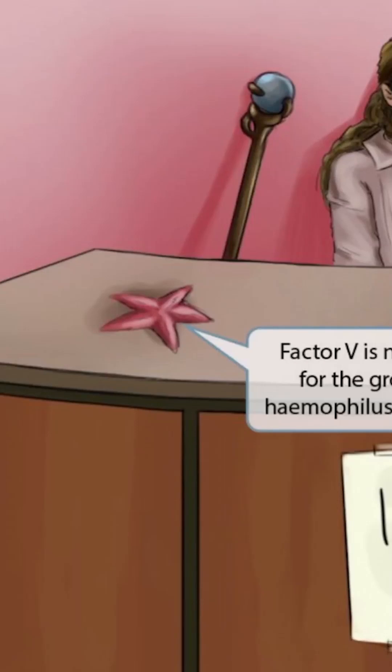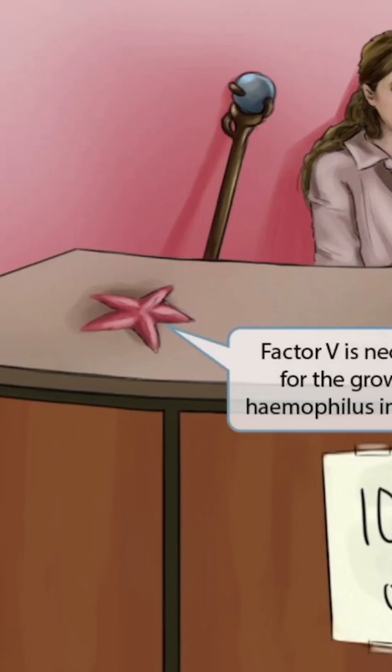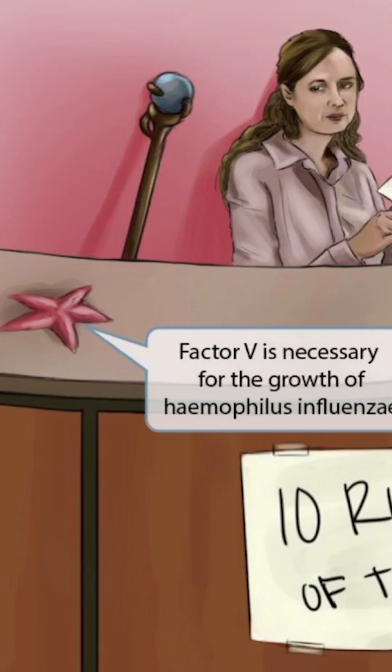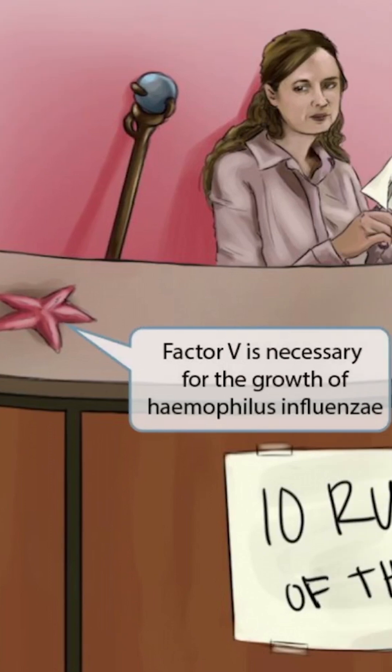Notice that we've included a starfish on Pamelin's desk. The starfish has five points, which should help you remember that factor V is necessary for the growth of H-flu. Factor V is also known as nicotinamide adenine dinucleotide, or NAD. So starfish with five points for factor V.